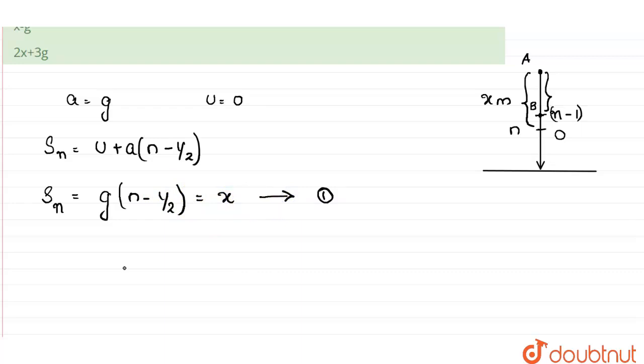Now we have to find the distance traveled by the body in n minus 1 seconds. So we will be using the same equation here. So S_{n-1} equals g into, instead of n, we will be substituting n minus 1. So g into n minus 1 minus half.